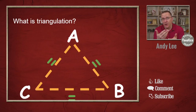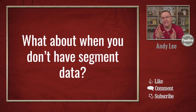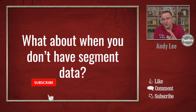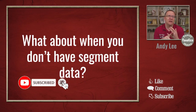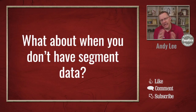We have three people that all match each other on the same segment. If you've tested with Ancestry DNA, one of the things you know is that they don't provide you this segment information. They provide you how much you share with your DNA matches and how many segments you share, and the largest segment of that. But each of the individual segments — which chromosome they're on and where their start and end locations are — they don't provide that.